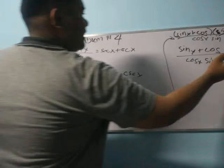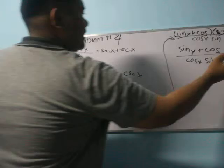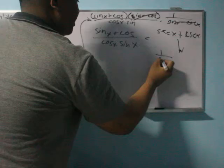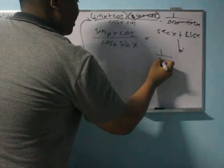So sin x plus cos x over cos x sin x can also be written as 1 over cos x plus 1 over sin x.